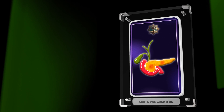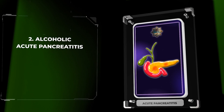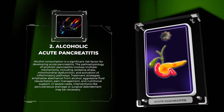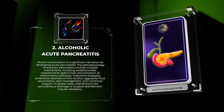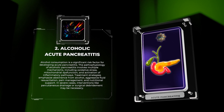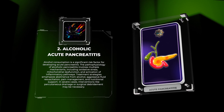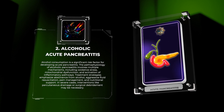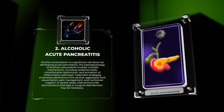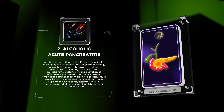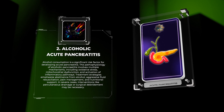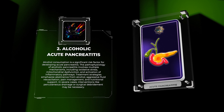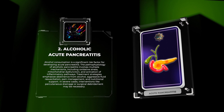Alcohol consumption is a significant risk factor for developing acute pancreatitis. The pathophysiology of alcoholic pancreatitis involves multiple mechanisms, including oxidative stress, mitochondrial dysfunction, and activation of inflammatory pathways. Treatment strategies emphasize abstinence from alcohol, aggressive fluid resuscitation, pain management, and nutritional support. In severe cases, interventions like percutaneous drainage or surgical debridement may be necessary.